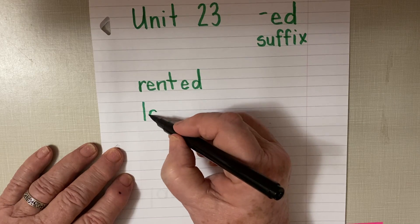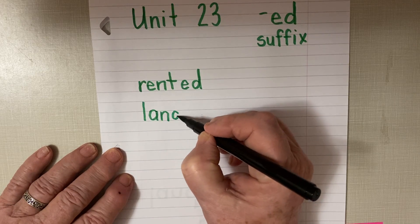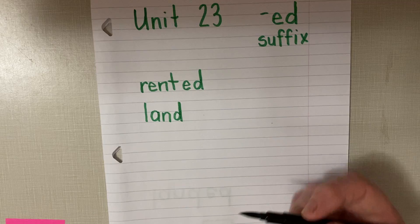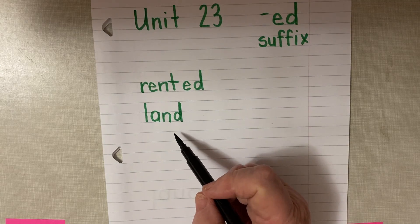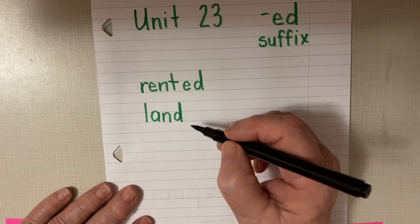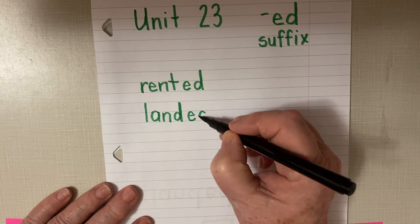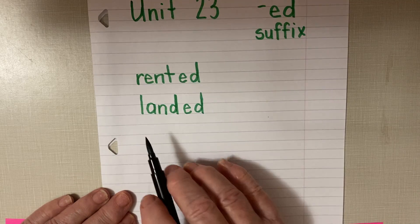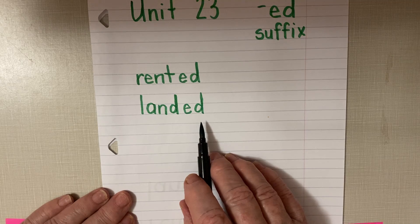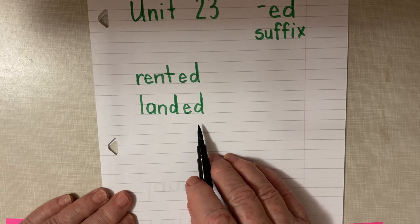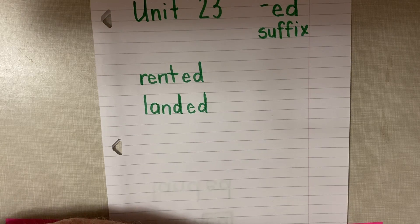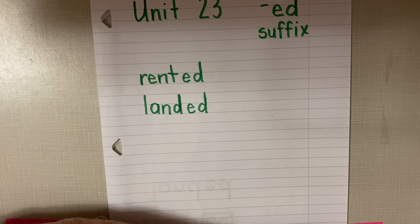Let's try this base word. If you're flying a plane and you're done flying and you want to bring the plane back to the ground, you land the plane. If we add the suffix -ed and change it to something that happened in the past — which we call past tense — now the word is 'landed.' So the base word is 'land,' we add the suffix -ed, and we change the meaning. The suffix is making a d sound at the end: landed.